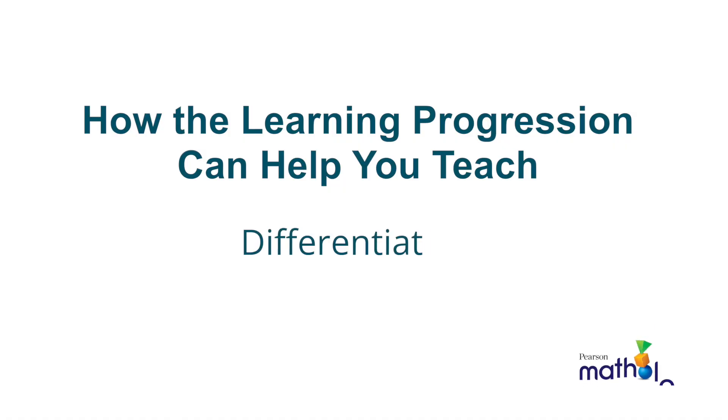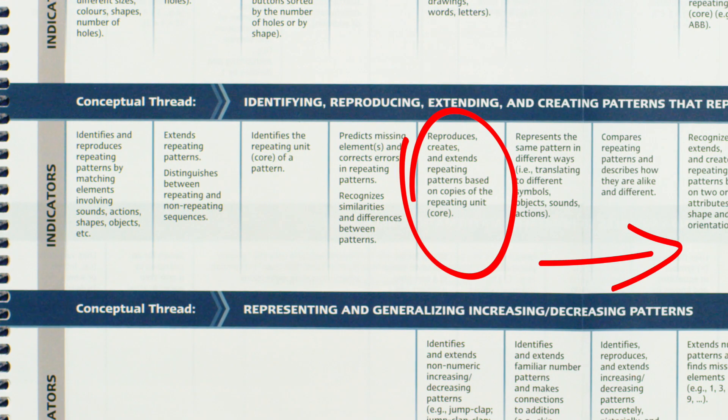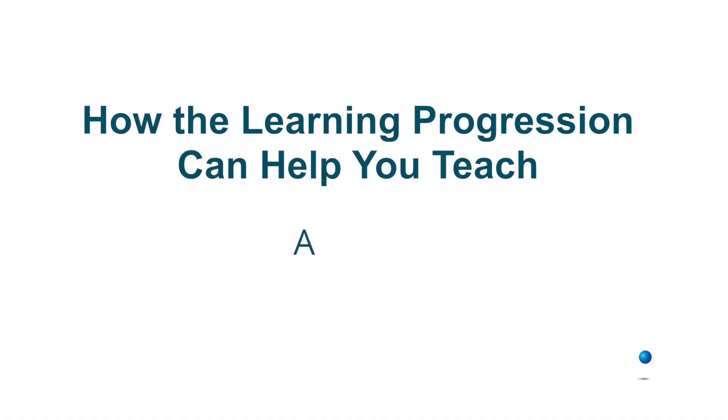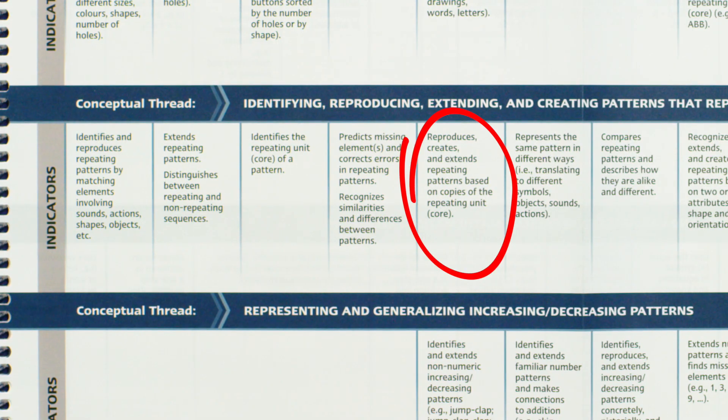Four, some students are ready for more advanced learning. The progression can help you plan learning for these students as well, all the while staying within the same conceptual thread. The indicators can also help teachers assess student work and monitor learning over time. Most importantly, the learning progression helps you assess and differentiate for individual learning needs.